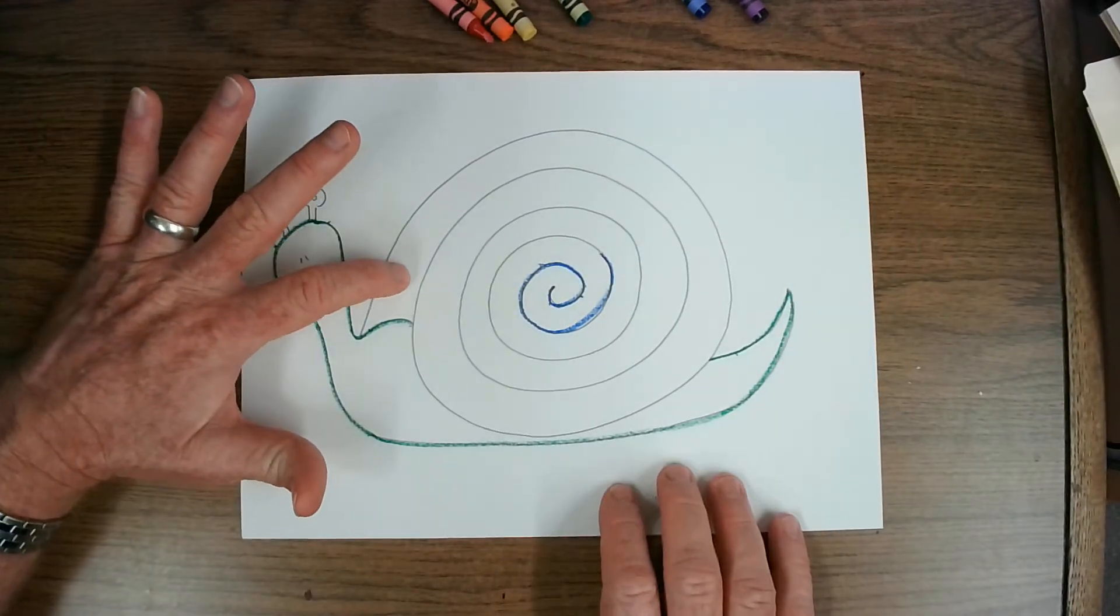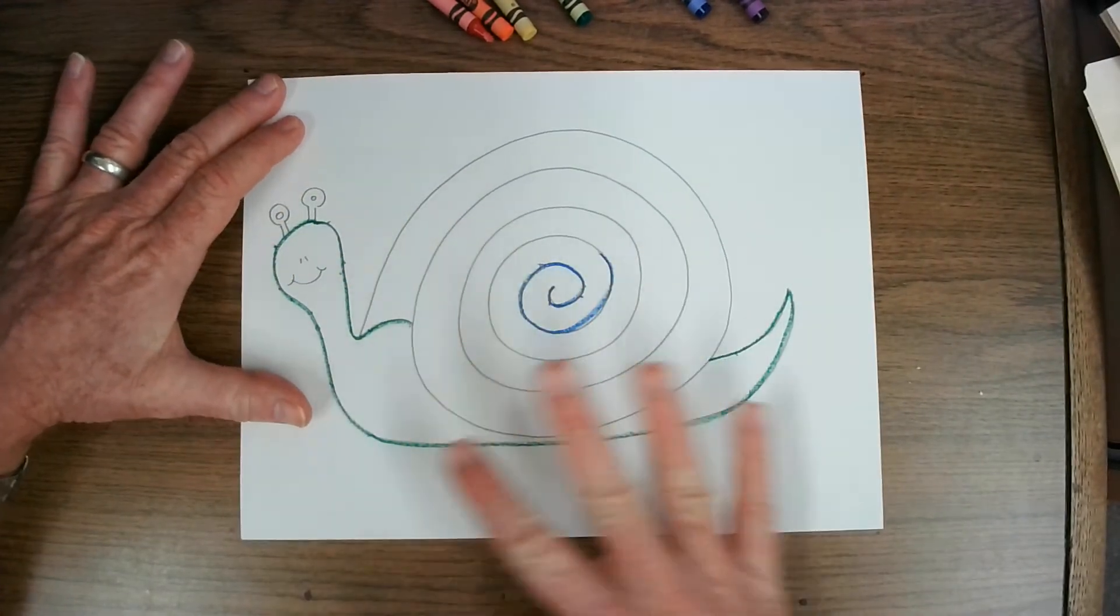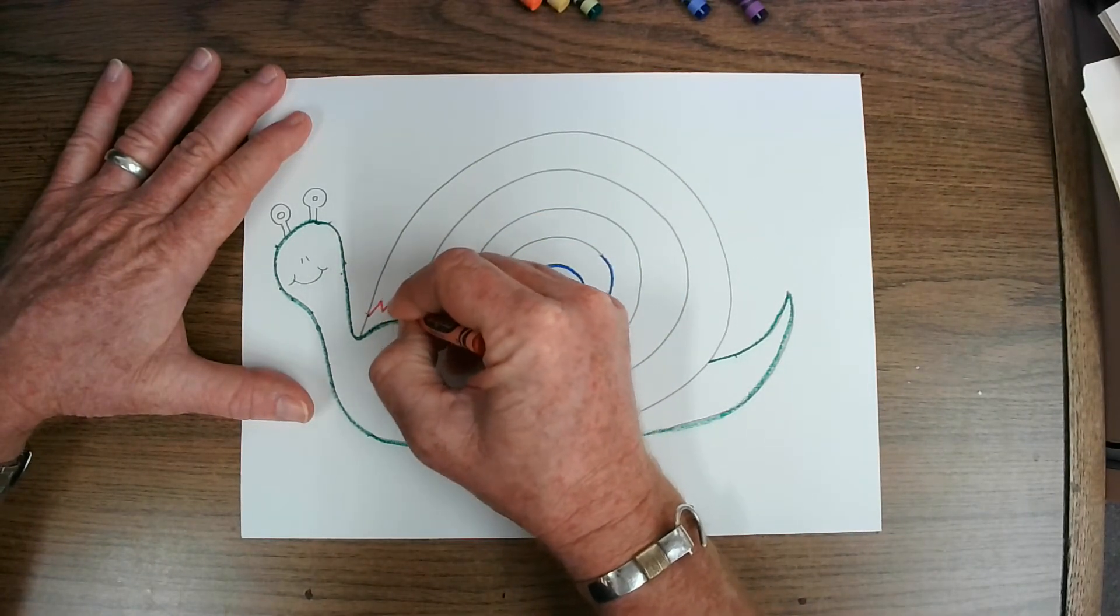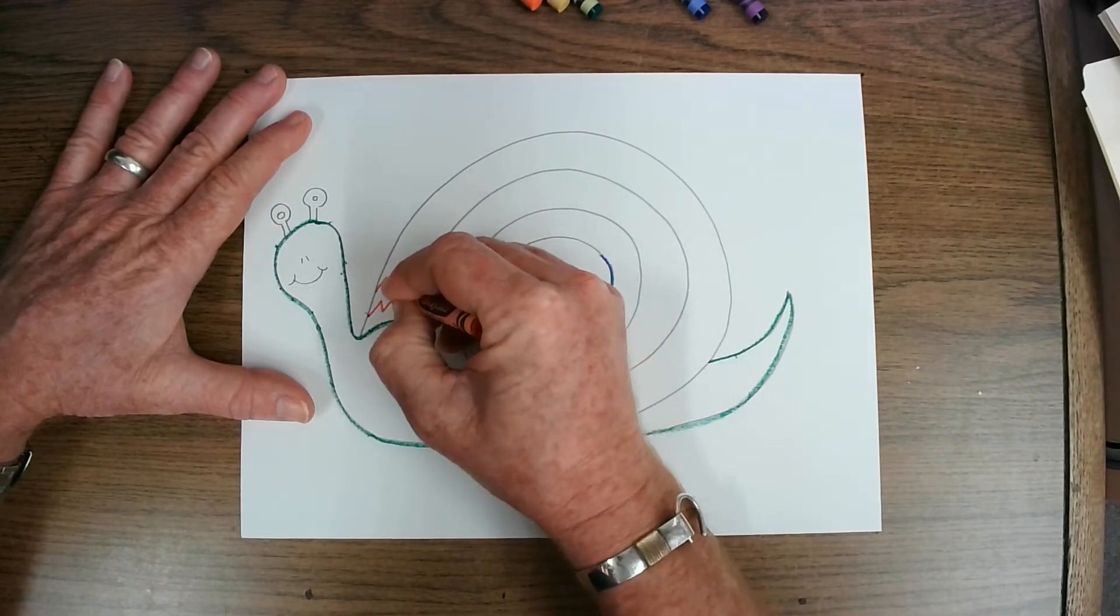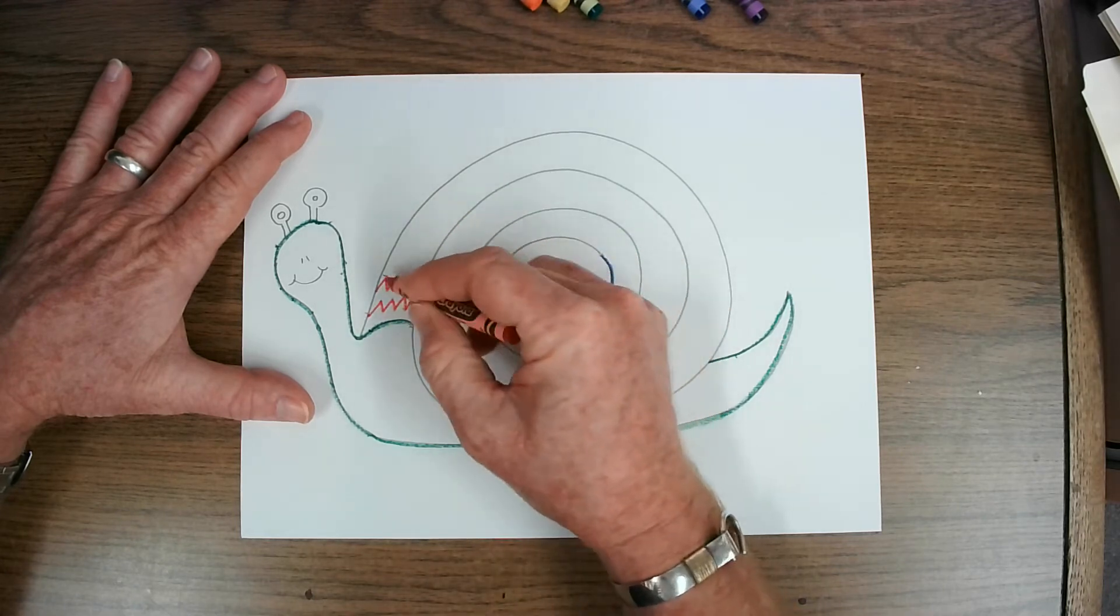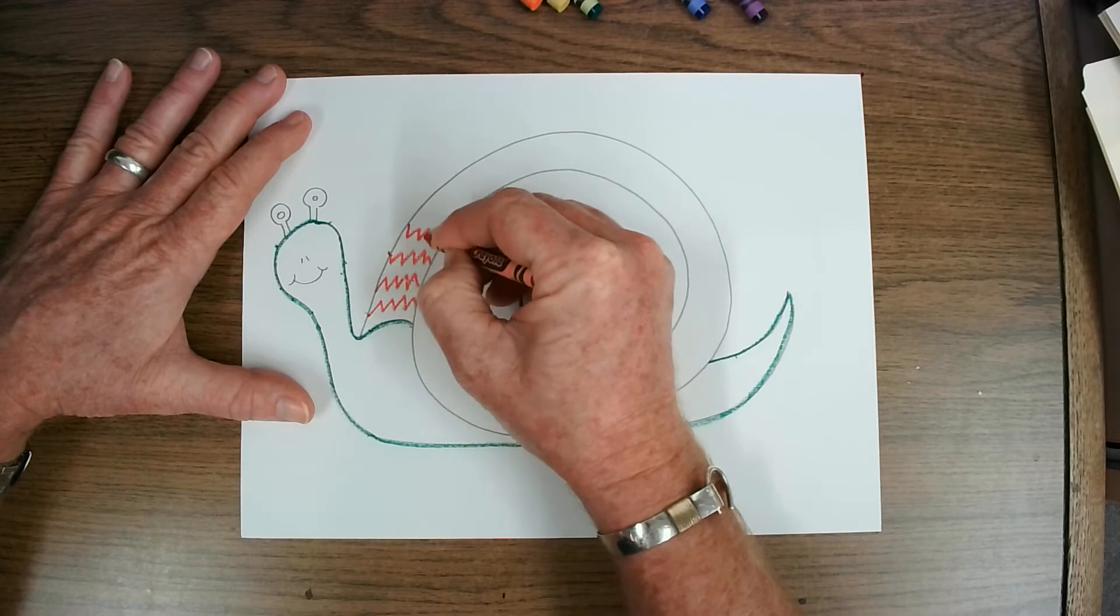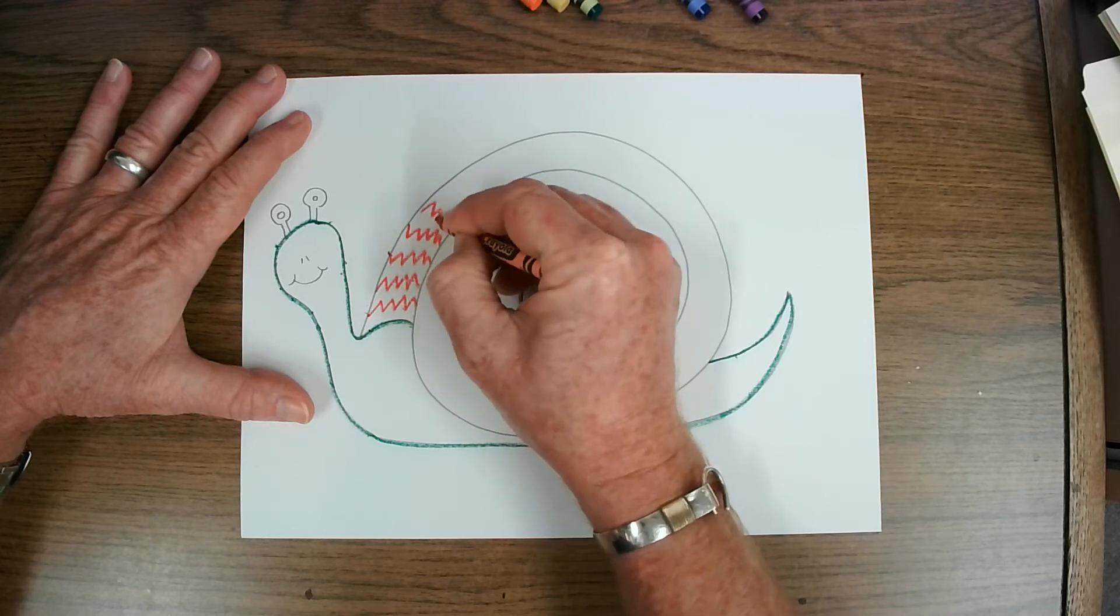Now, inside the snail shell, we are going to use the four line types to decorate the shell. We're going to use a lot of different colors too. So maybe I will use some zigzag lines first. Notice all my lines are nice and neat going the same direction. We're not scribble-scrabbling lines in here. We're making nice, neat lines. And I'm going to make some red zigzag lines for a little bit.